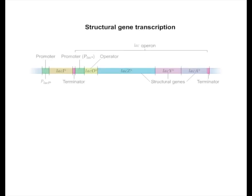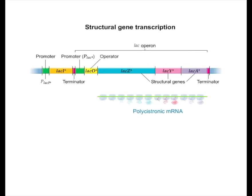When the structural genes in an operon are transcribed, a single mRNA is produced. This mRNA is said to be polycistronic because it carries the information for more than one type of protein.